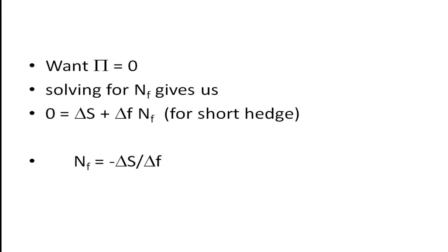If we want the change in profit to be zero, we can set profit equal to zero and solve for the hedge ratio NF. We see that it's minus the change in the spot divided by the change in the futures contract. So the bigger the position, the more contracts we're going to need. This assumes that we have a short hedge, so we're going to sell those futures contracts.